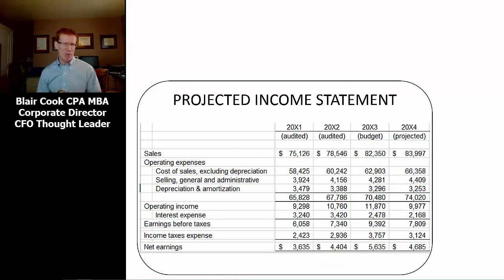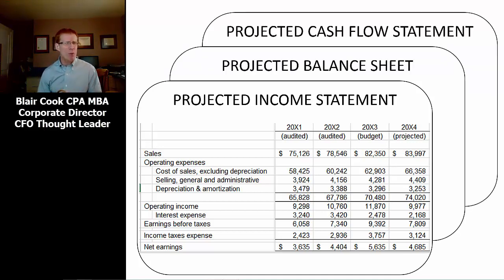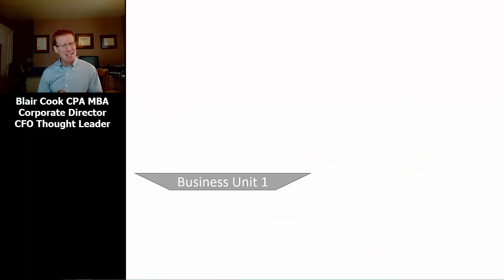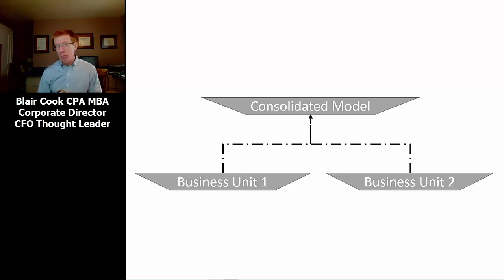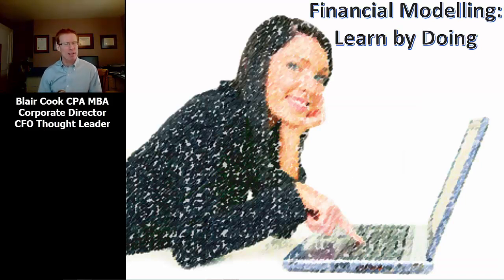We're going to learn how to build a financial model of all the statements that comprise a set of financial statements. Many forecasts I see as an executive and a corporate director only focus on the income statement, which provides an incomplete picture at best. In this course, we will also forecast the balance sheet and the statement of cash flows to provide a fulsome and integrative view of the future. We will also cover how you model multiple divisions or subsidiaries and have them roll up into one consolidated result — it's not an insurmountable task with a little intelligent planning and a lot of Excel discipline.